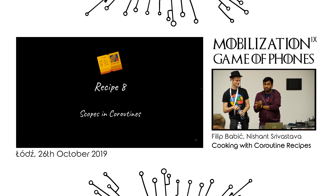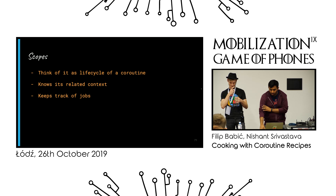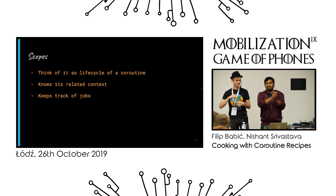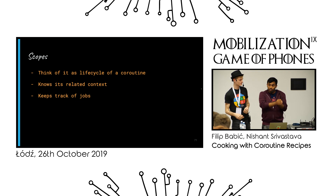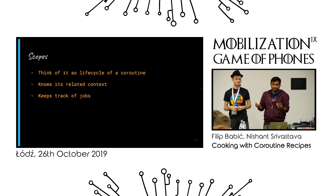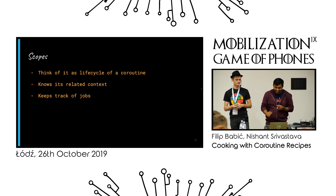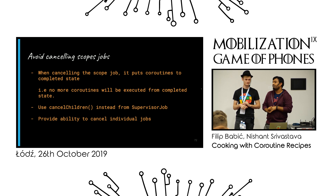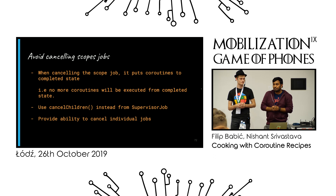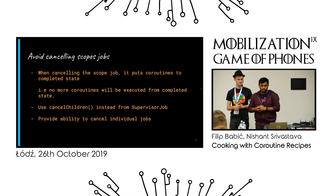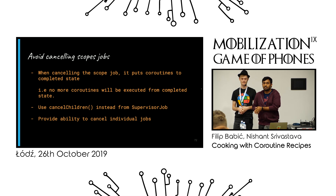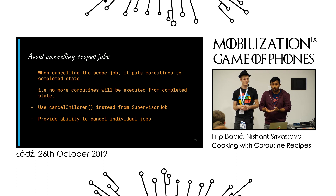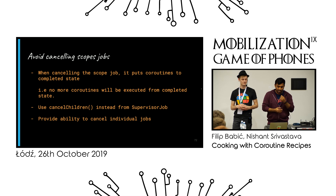Coroutines define their lifecycle using CoroutineScope, which knows about all context — what it's doing, how many jobs are running — contained inside that scope. However, calling cancel on the scope is not recommended. When you cancel the scope, you cancel all running jobs and put all coroutines in a completed state, meaning from that point on, if you try to start any more coroutines from this scope, they will never execute.